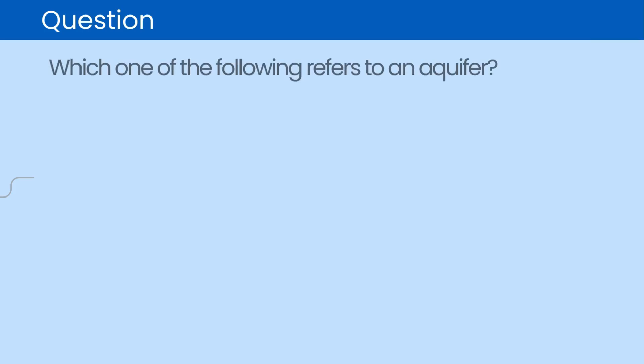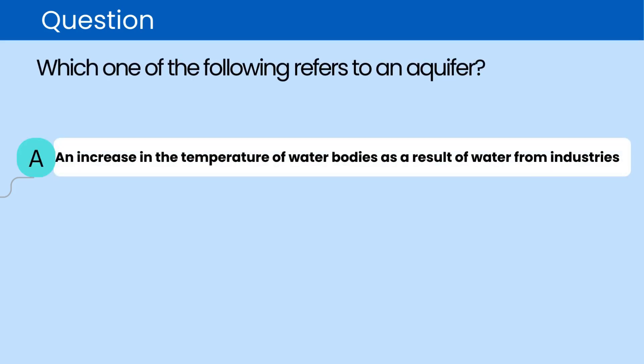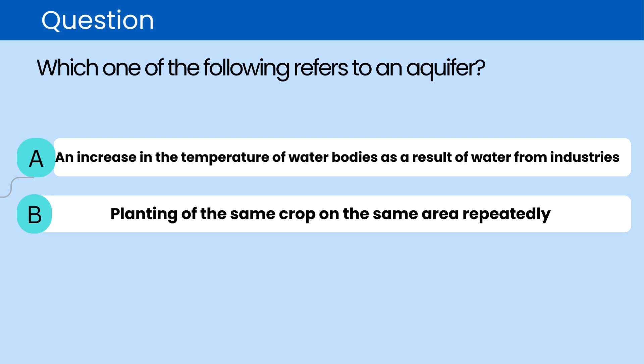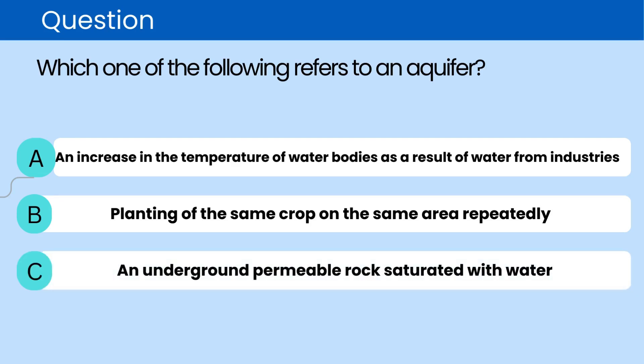Question. Which one of the following refers to an aquifer? A. An increase in the temperature of water bodies as a result of water from industries. B. Planting of the same crop on the same area repeatedly. C. An underground permeable rock saturated with water. D. The release of water with chemicals from mines.